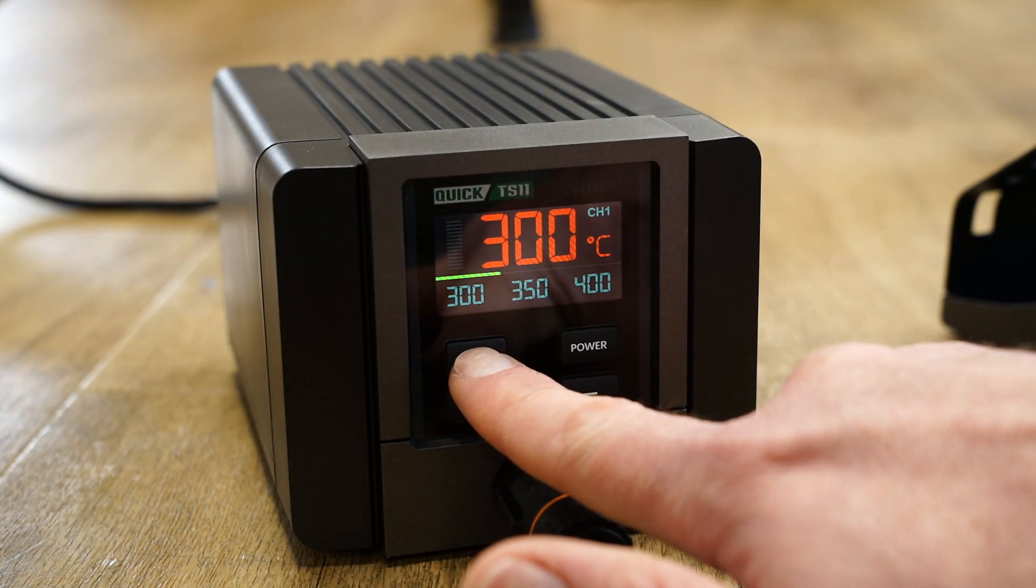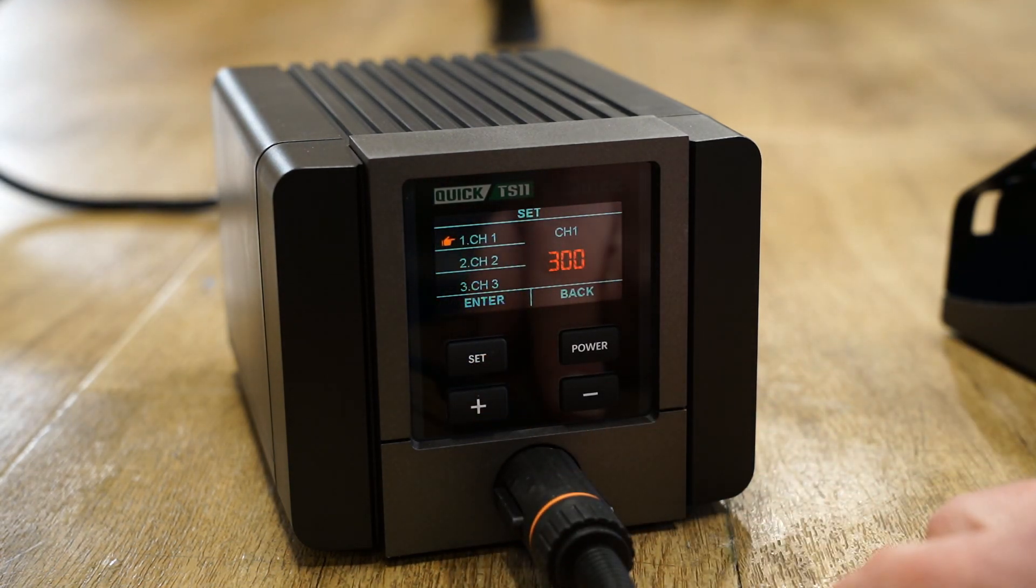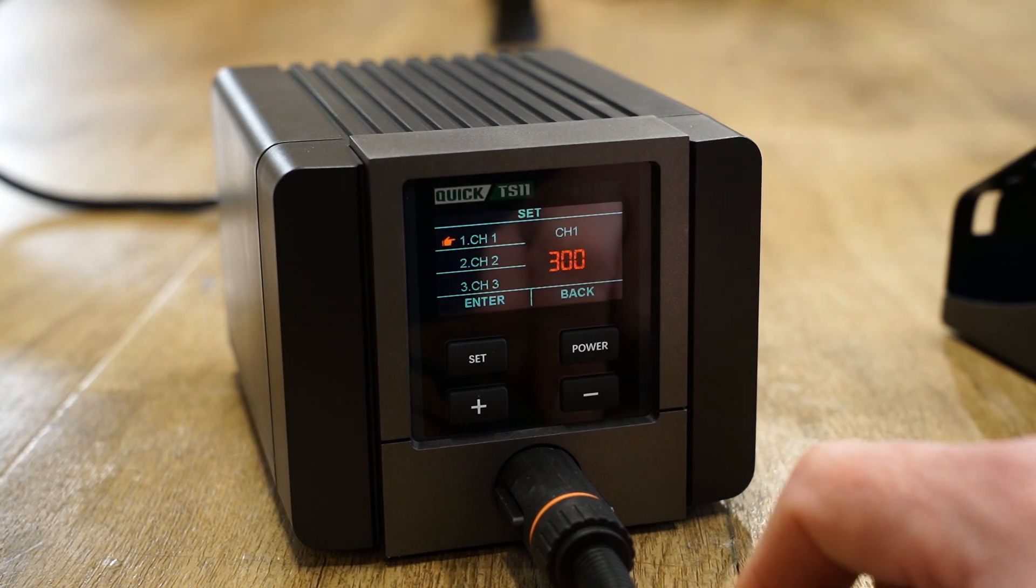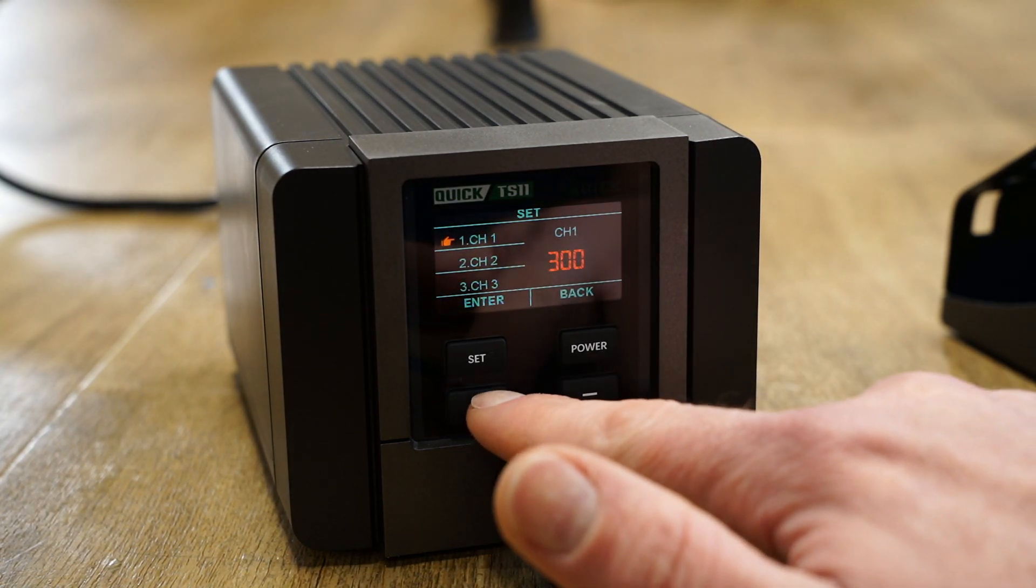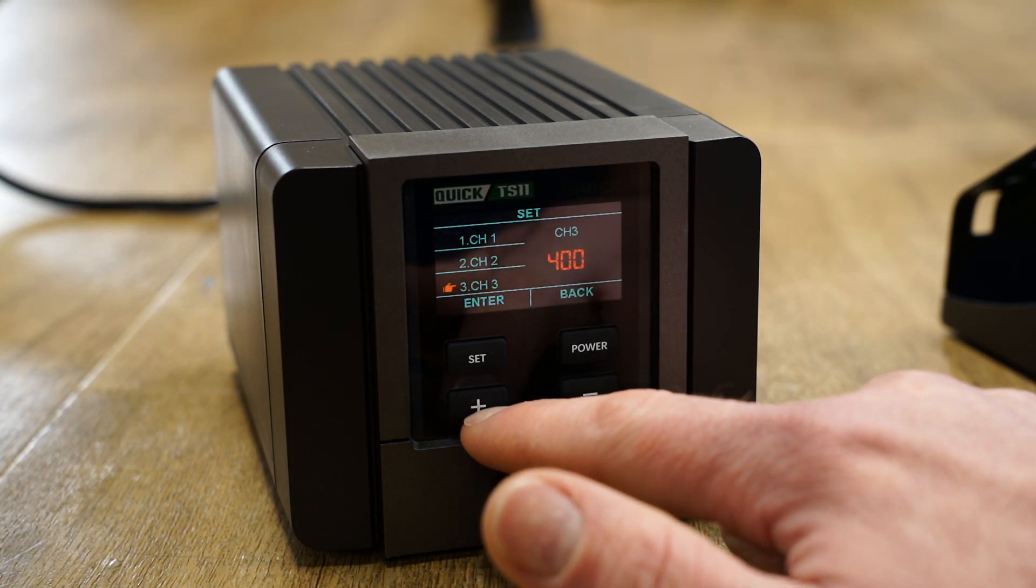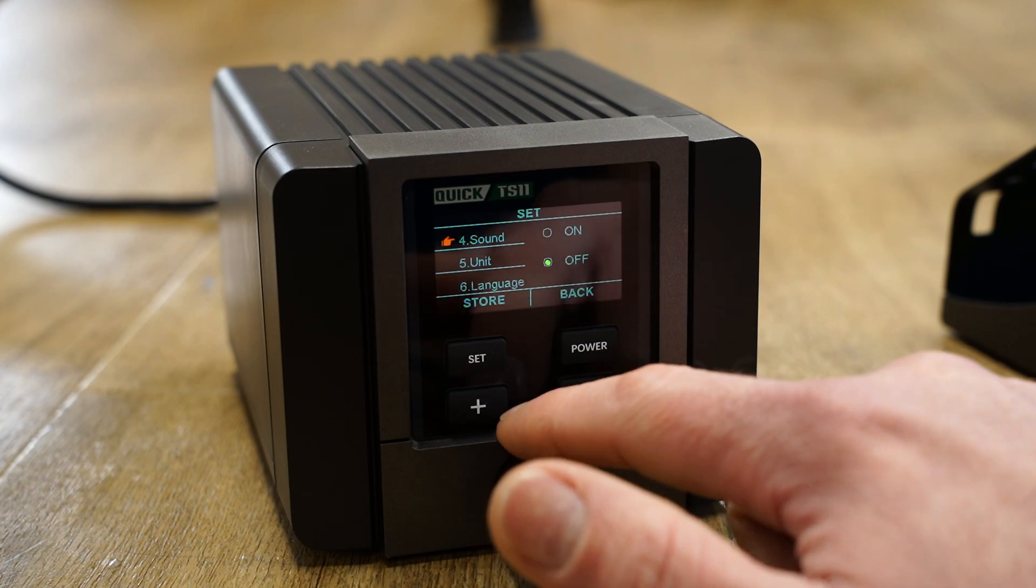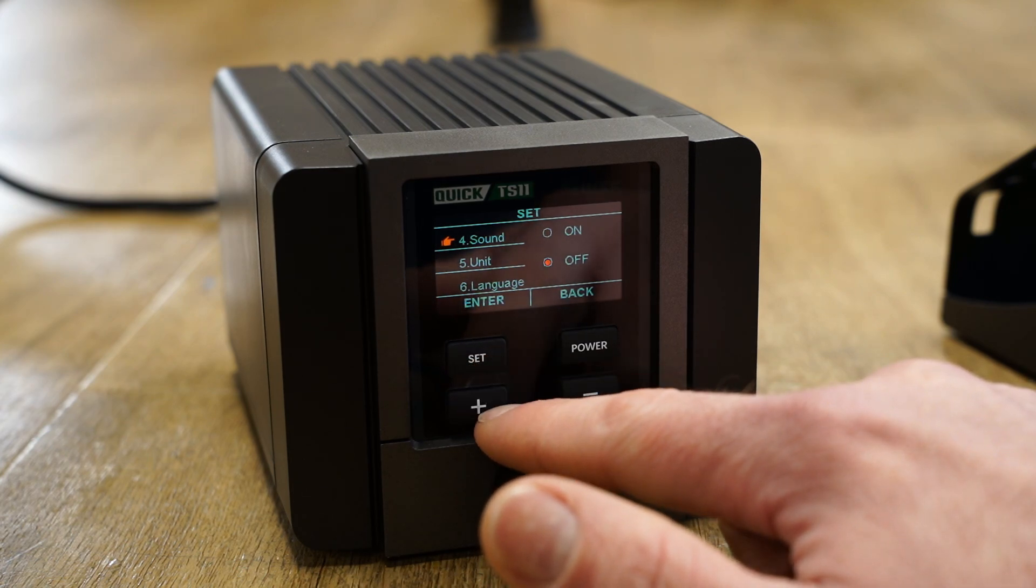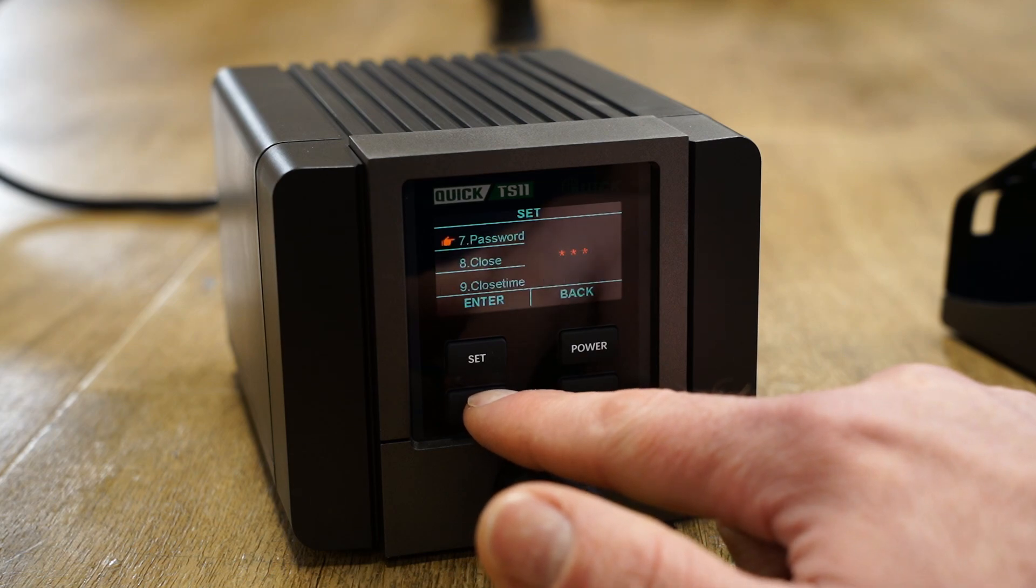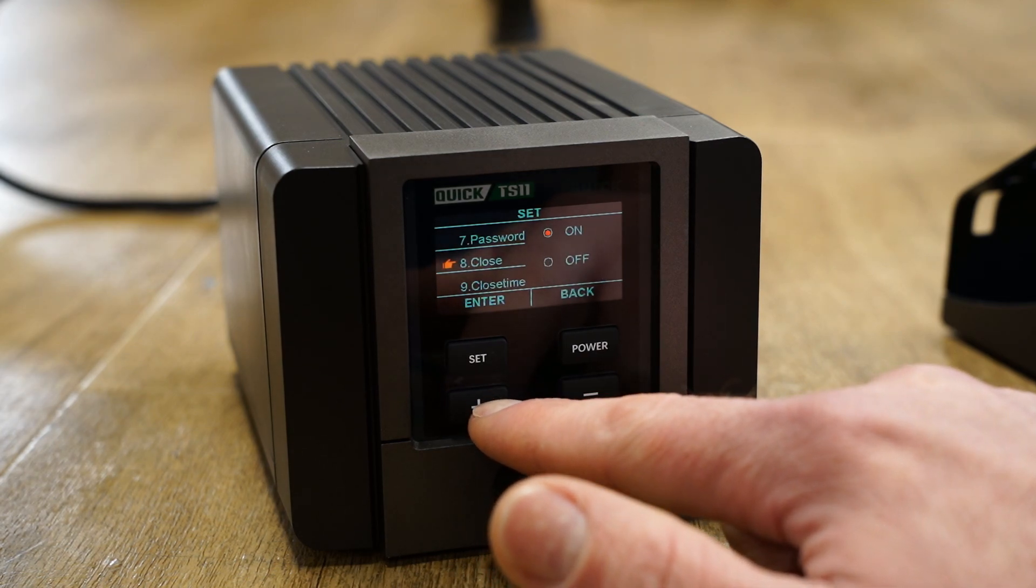Long pressing the set button opens the menu. Here we can program our three preset temperatures up to a maximum of 450 degrees Celsius. We can disable the button tone, change the temperature between Celsius or Fahrenheit, change the language, and program the shutdown and sleep timers.